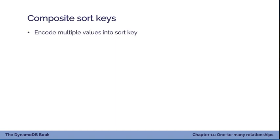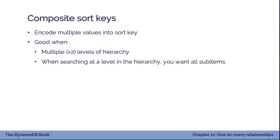The composite sort key pattern encodes multiple values into the sort key to build a hierarchy, allowing you to search at different levels. This is good when you have multiple nested one-to-many relationships. However, it doesn't work in all situations — going back to the SaaS example with organizations, users, and tickets, when searching at a level in the hierarchy you didn't want all nested sub-items returned. Use this strategy when searching at a level means you want all sub-items. Use it sparingly.